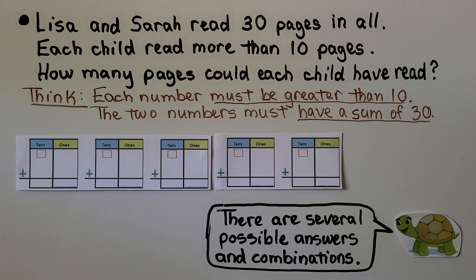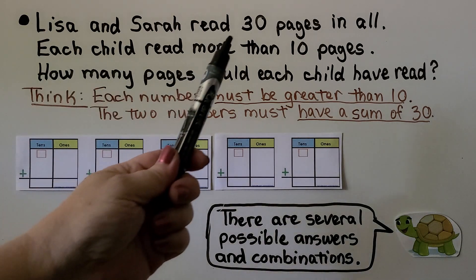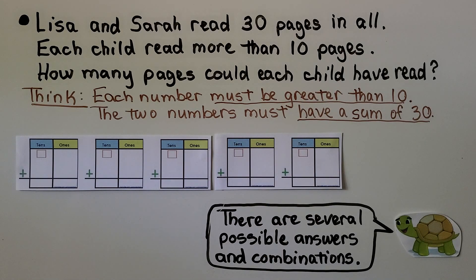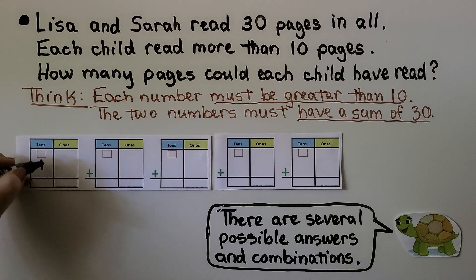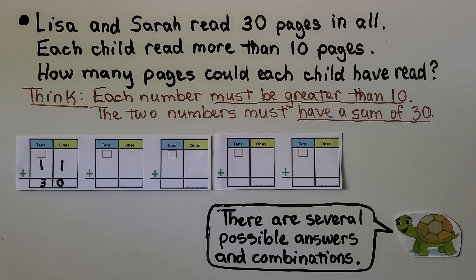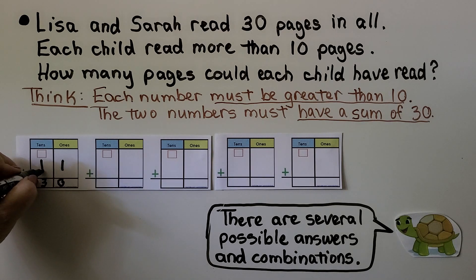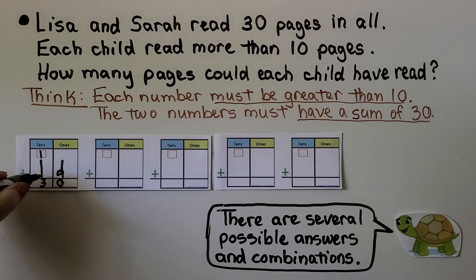Lisa and Sarah read 30 pages in all. Each child read more than 10 pages. How many pages could each child have read? Each number must be greater than 10, and the two numbers must have a sum of 30. We think: 11 is greater than 10. What do we need to add to 11 to equal 30? If you said 19, you're right. Nine plus one more is ten — we put the 1 up here and 0 in the ones. We add the three tens: that's 30.